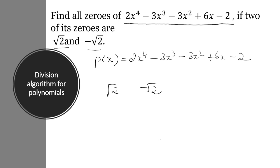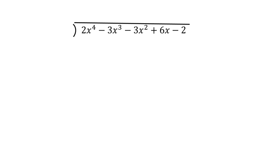So x plus root 2 into x minus root 2 is a factor of P of x. If we multiply these two by using a plus b into a minus b formula, what will you get? x square minus 2. So x square minus 2 is a factor of P of x. Means if we divide P of x by x square minus 2, you will get remainder as 0.